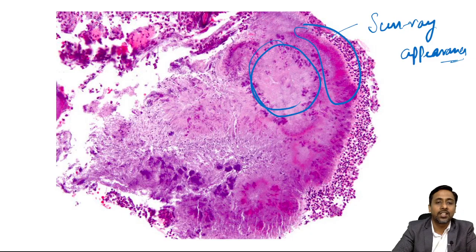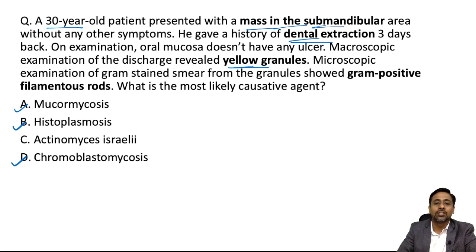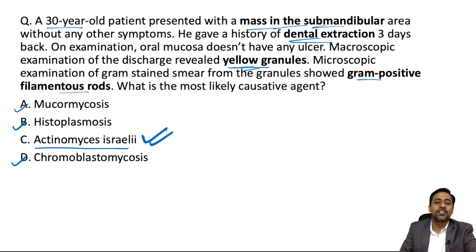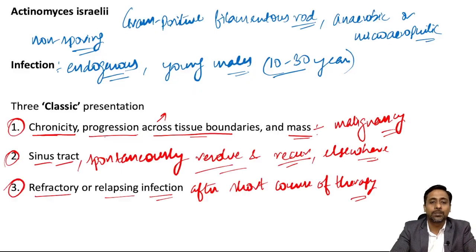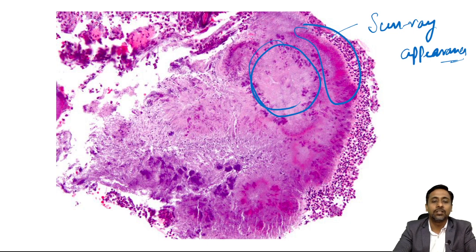The given case is actinomycosis. Now you understand the importance of the dental extraction history, the mass in the submandibular area as the most common presentation, and the yellow granules revealing gram positive filamentous rods. If sun-ray appearance had been mentioned, you would also have been able to answer. I hope this short and crisp video will be very helpful in answering all questions related to this topic. All the best — see you in the next video, take care.